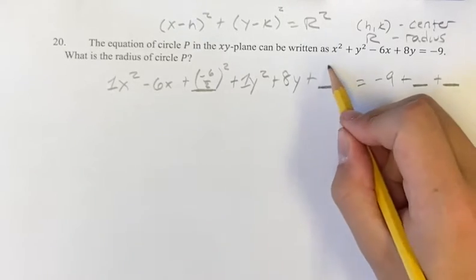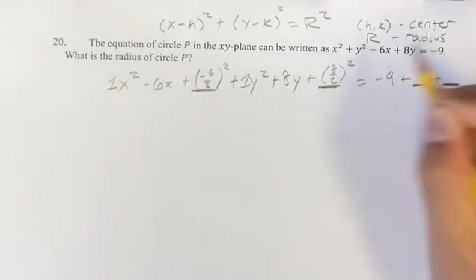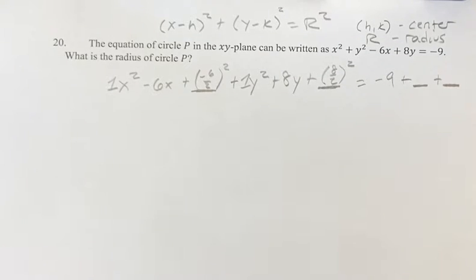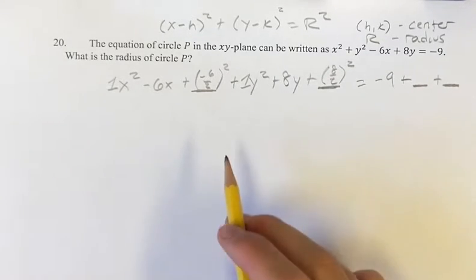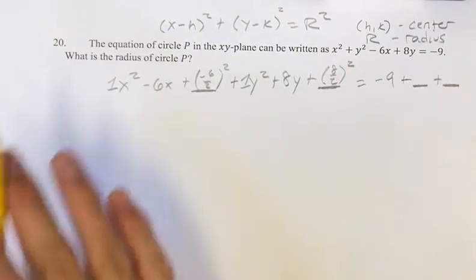Same thing over here. Take this middle value, divide it by 2, and then square it. Just to show you what that's going to look like for converting this into that form, we can do that in a second.